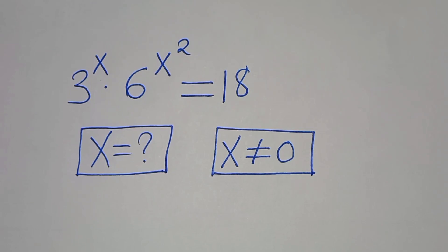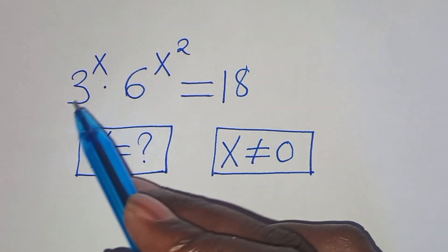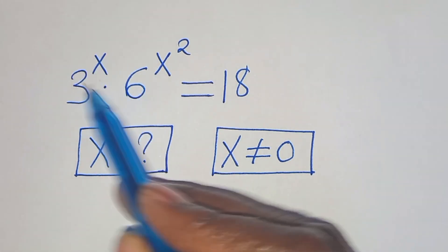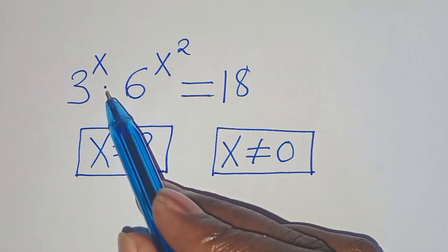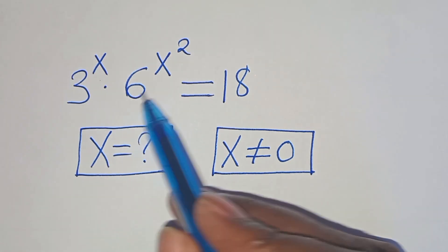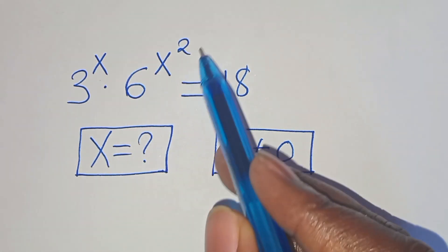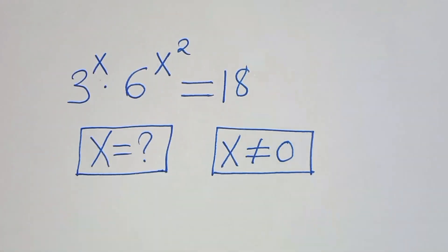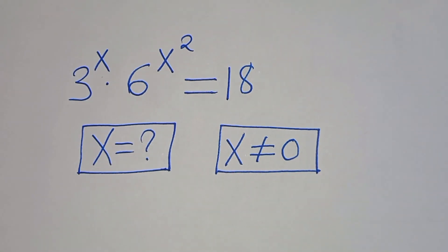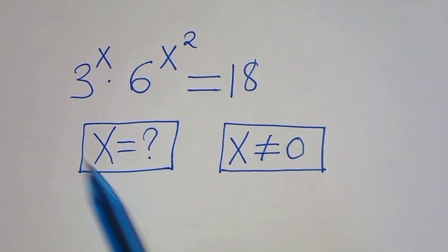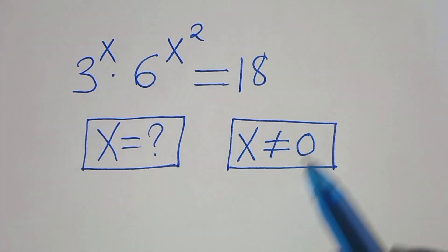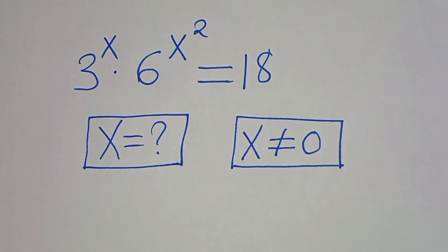Hello everyone, you're welcome to solve this nice algebra problem, which is 3 to the power of x multiplying by 6 to the power of x squared. This is equal to 18. So what are the values of x, given that x is not equal to 0?